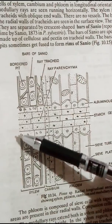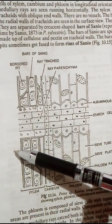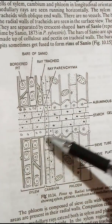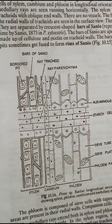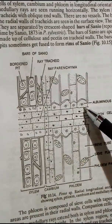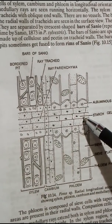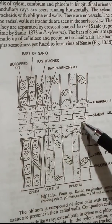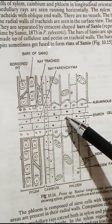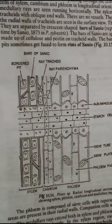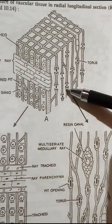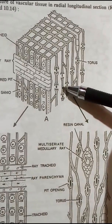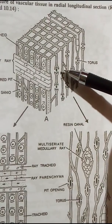As you can see in this diagram, in the radial longitudinal section the medullary rays are cut lengthwise — this portion here shows the medullary rays. When a vascular bundle is cut in radial longitudinal section, the rays are cut lengthwise, whereas in tangential longitudinal section the rays are cut transversely.